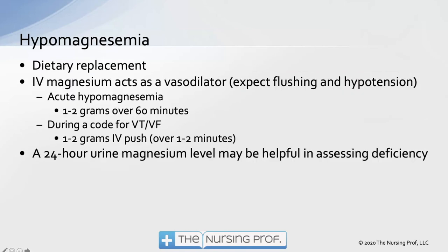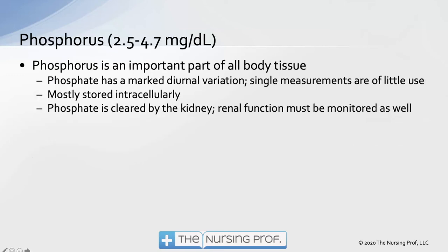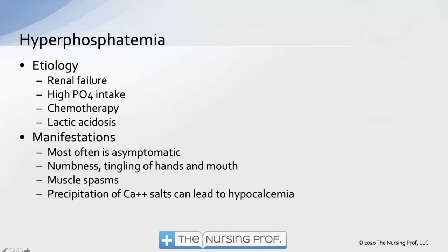Dietary replacement is always preferable for hypomagnesemia since electrolytes are better absorbed through the gut than IV. Phosphorus is an important part of all body tissues, and the system most prone to changes in phosphorus levels is the respiratory system.